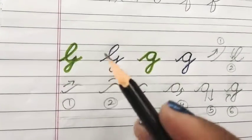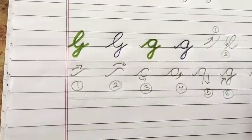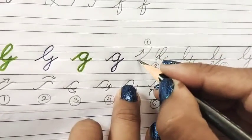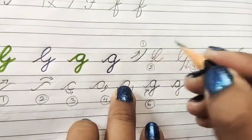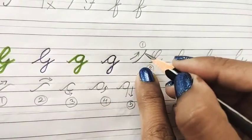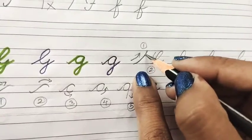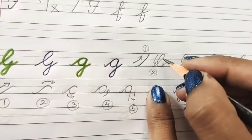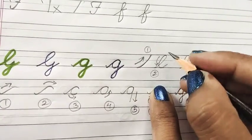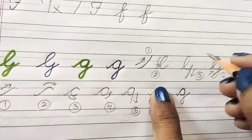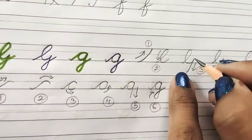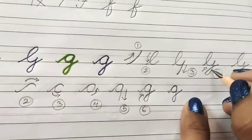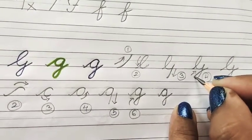Letter G, capital G and small g. For capital G, as we did for small f, draw a slanting line like this, then form a loop. After forming a loop, drag this line over here. After dragging it up to here, you have to form another loop.